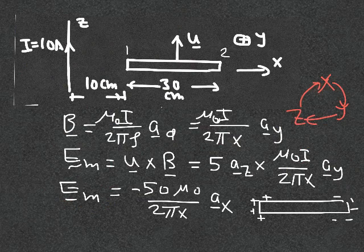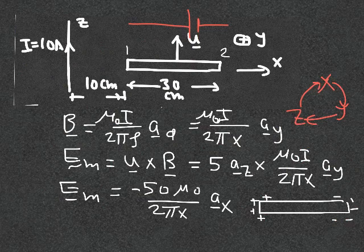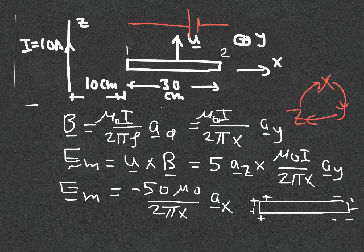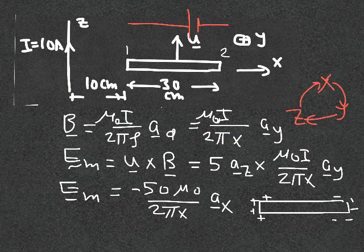So the equivalent electric field points in the minus a_x direction, moving negative charges to one side and making that terminal higher in potential than the other. The whole rod behaves like a battery with that polarity. If connected to an external resistance the loop closes and current flows, but right now the loop is open. Our target is to calculate V1 minus V2, which requires integrating E_m · dl, where dl = dx · a_x along the rod.